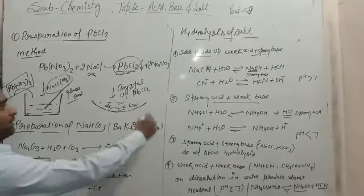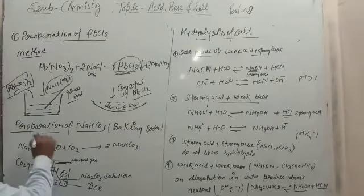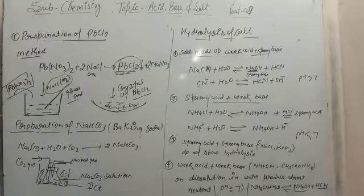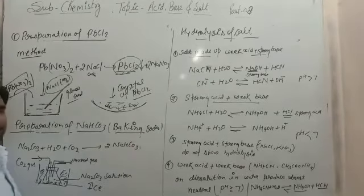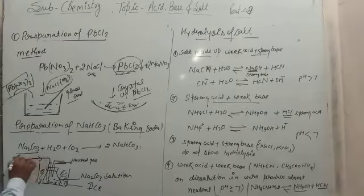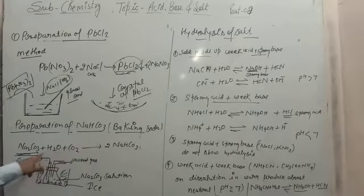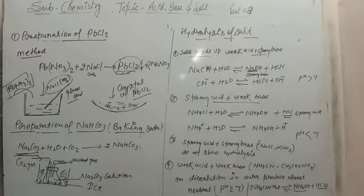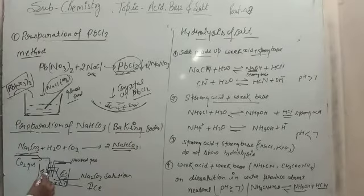After crystallization, it converts into crystalline lead chloride. Now the next salt is preparation of sodium bicarbonate, also known as baking soda. For the formation of baking soda, we use sodium carbonate — known as washing soda. When carbon dioxide is passed into the aqueous solution of sodium carbonate, it converts into sodium bicarbonate, also known as baking soda.